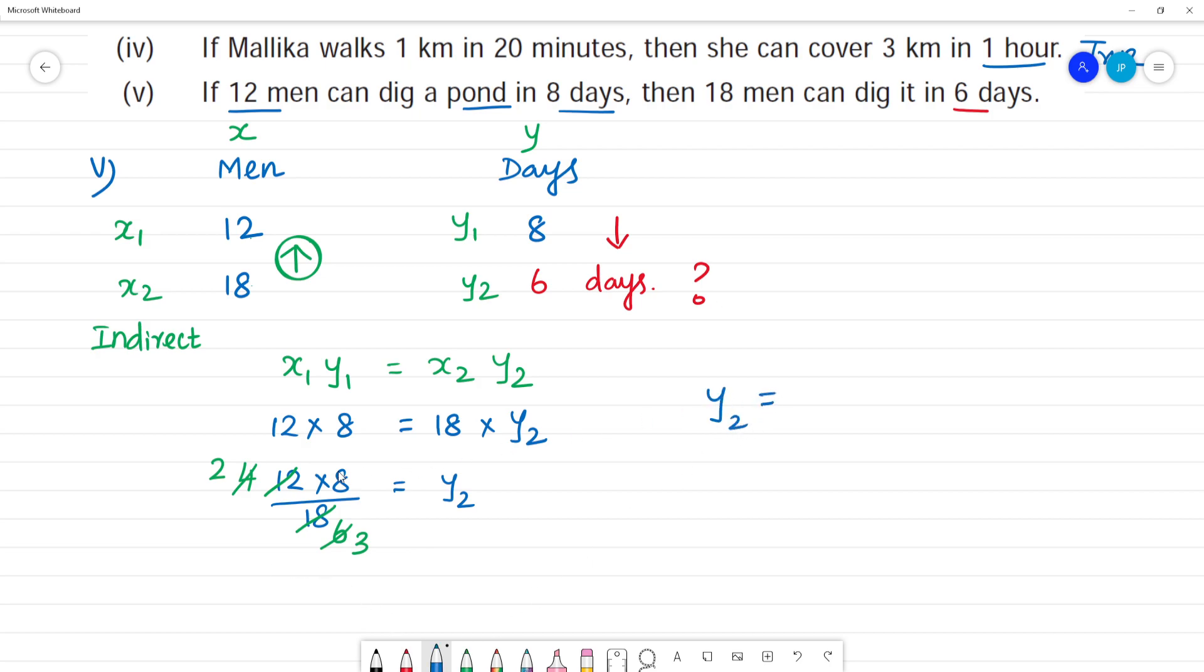So what is y2? y2 is equal to 8 multiplied by 2 is 16 by 3. So 16 divided by 3, we get 5, 3 times 5 is 15, remainder 1. That means 5 and 1/3 days.